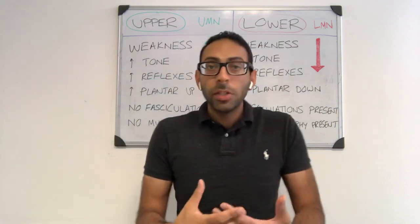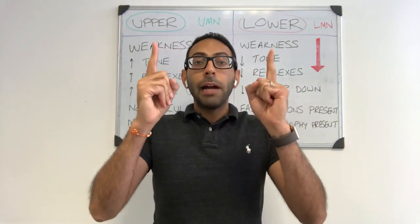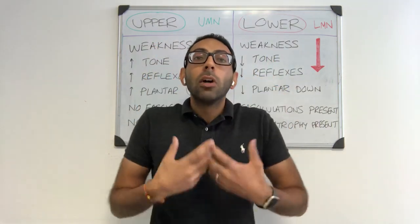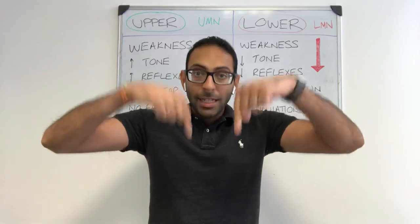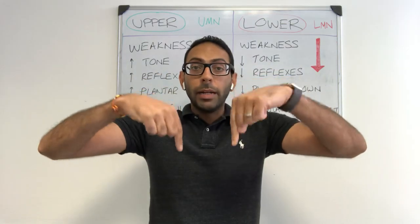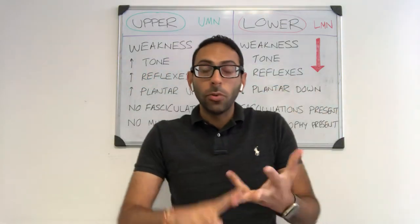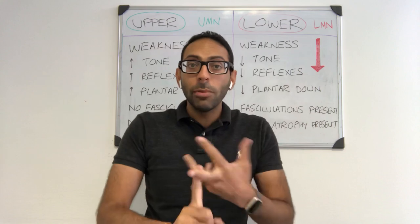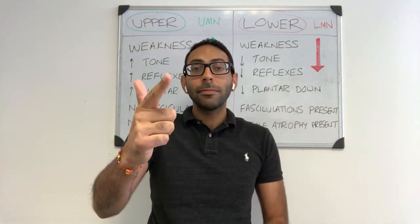So remember: upper motor neurone lesion — think of a big green upward arrow; lower motor neurone lesion — think of a red downward arrow. Hope this helps. Much more like this on our AKT webinars, courses and audiobooks. Hashtag can pass, will pass.